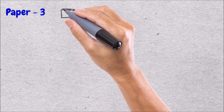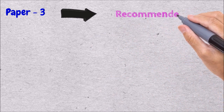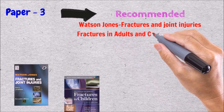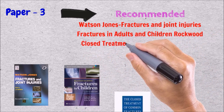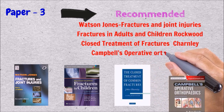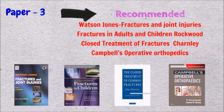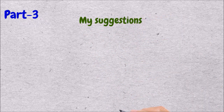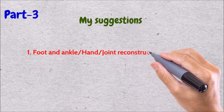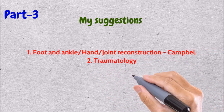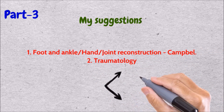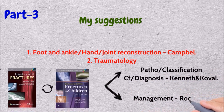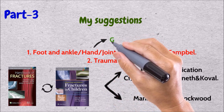For Paper 3, where the majority of questions are on trauma and orthoplasty, the recommended books are Watson and Jones, Rockwood (both Adults and Children), Charnley's Closed Treatment of Fractures, and Campbell's. My suggestions: for foot, ankle, hand, and orthoplasty it is always Campbell; for trauma — classifications, diagnosis, and clinical features — I read from Canale and Beaty; and management is always from Rockwood. You can also refer Green's for hand.